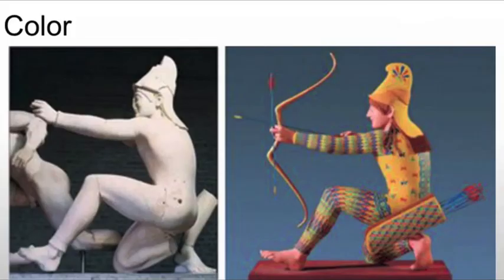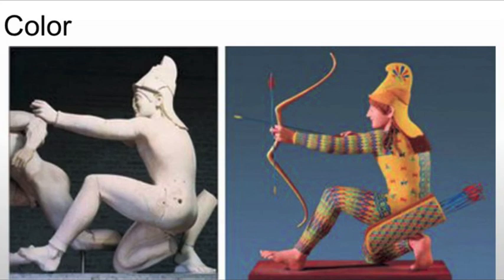Then we have color. Color can come from the material being used — for example, paint — or it can come from the stone or wood itself. Most sculptures up until the Renaissance would have been painted, including those on Gothic cathedrals or the great ancient Greek sculptures we're used to seeing in white, which in fact would have been brightly painted. Those colors can affect the way we read the sculpture — whether it's colored realistically, using flesh tones, or something more symbolic like painting a figure blue.